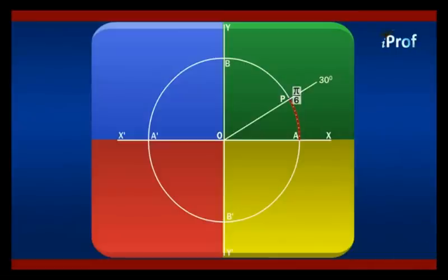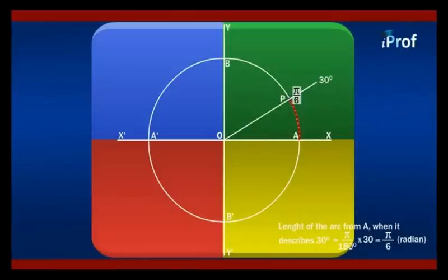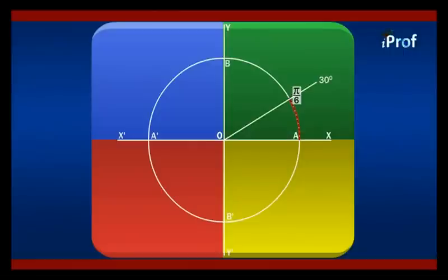This arc AP — the arc of the unit circle from A to P — will be equal to 30 degrees expressed in radians. Since 180 degrees equals π radians, 30 degrees equals π/180 × 30, which equals π/6 radians. Therefore, this arc length is equal to π/6 radians.